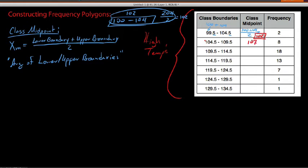So, we say the class midpoint between 104 and a half and 109 and a half is 107. We need this information. I'll tell you why here in a minute.